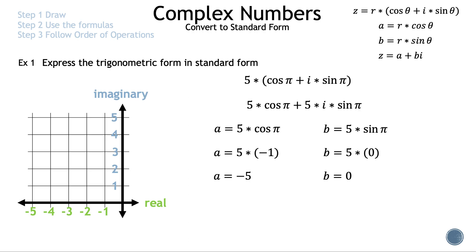Since we want standard form, let's write z = a + bi. We substitute −5 for a and 0 for b, giving z = −5 + 0i. And since 0i = 0, z = −5. Now let's graph it — we go 5 to the left for a, and since b = 0, that is example 1.